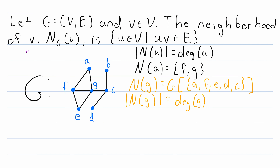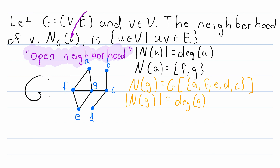Under either definition, what we've been talking about so far is what's called an open neighborhood. Unless otherwise stated, a neighborhood is assumed to be an open neighborhood, which means it doesn't include the vertex it's being evaluated at. So the neighborhood of v does not contain v — that's what makes it an open neighborhood.